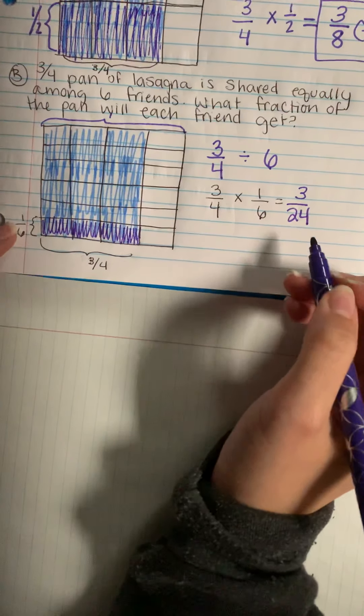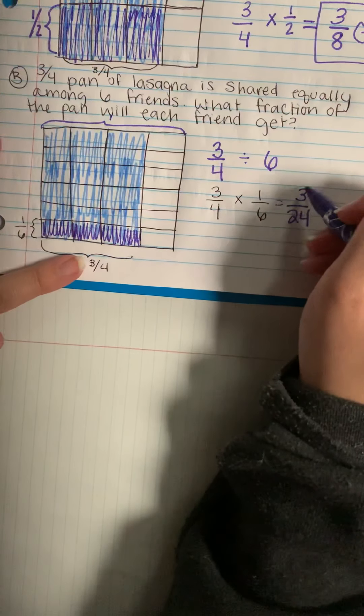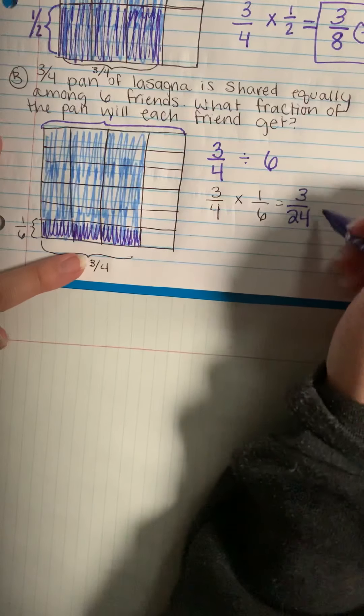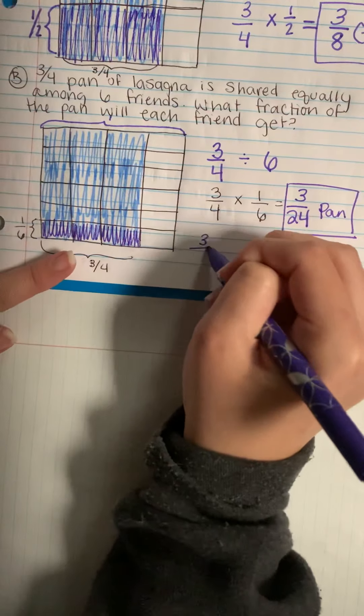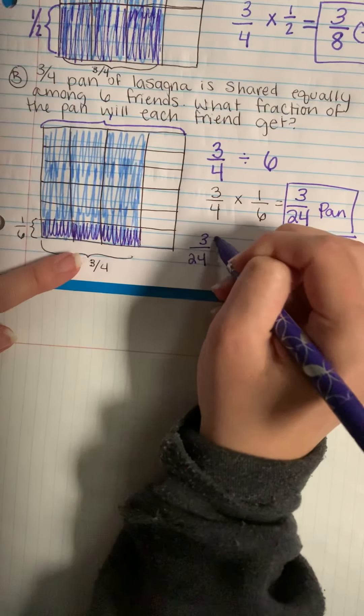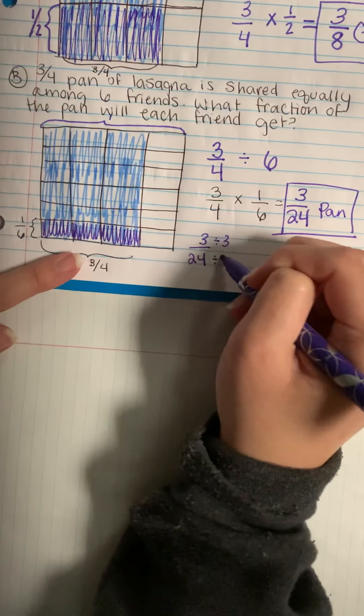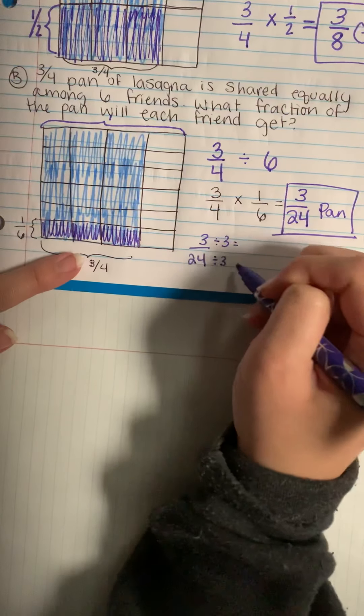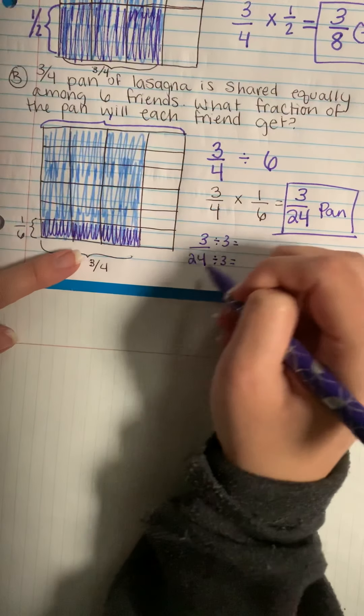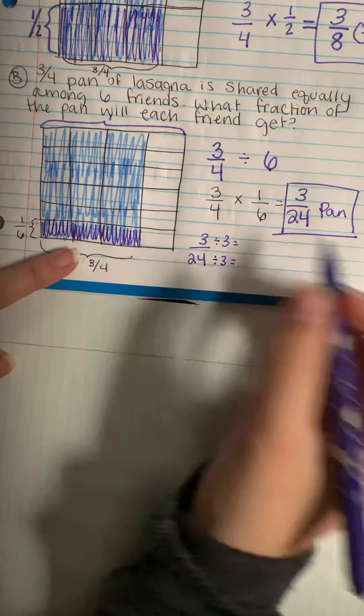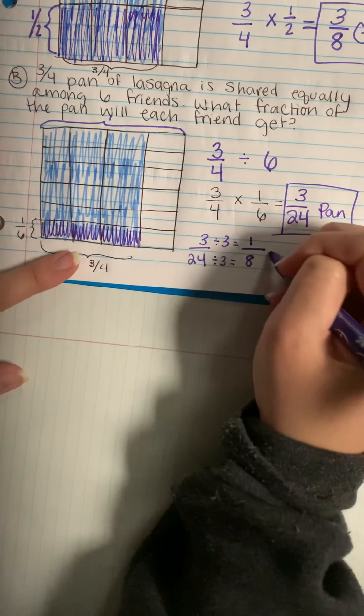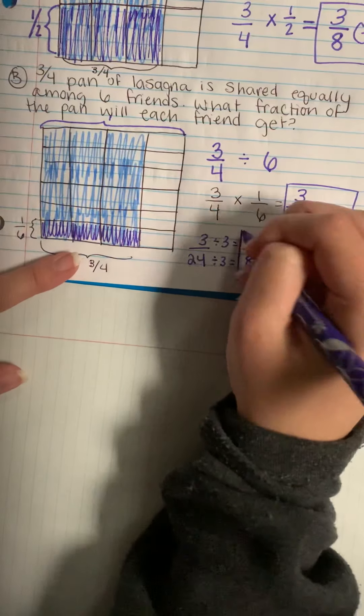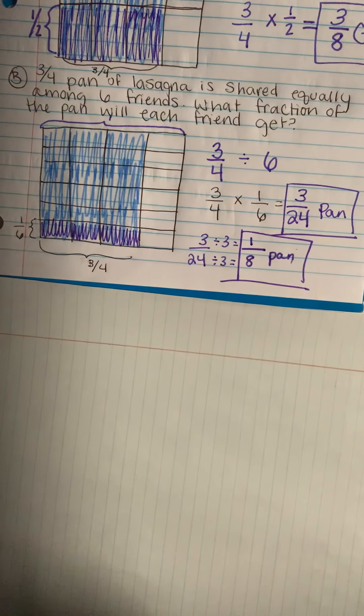I could reduce this. This could be my answer, three 24ths of a pan. But if you choose to simplify, you would do three over 24. I know three can go into both of those. Or three is divisible by three and 24 is divisible by three. So three divided by three is one, 24 divided by three is eight. So an equivalent answer would be each friend gets one-eighth of the pan.